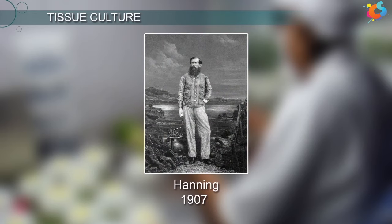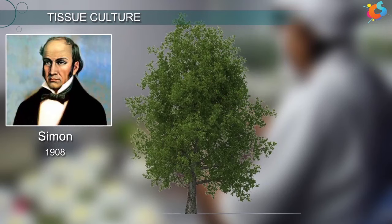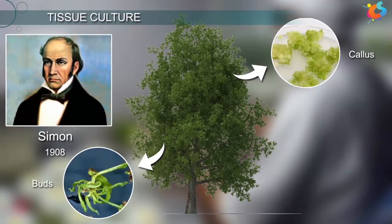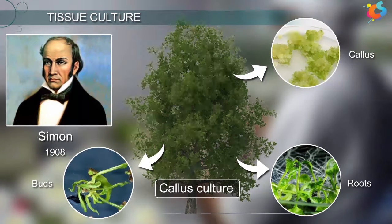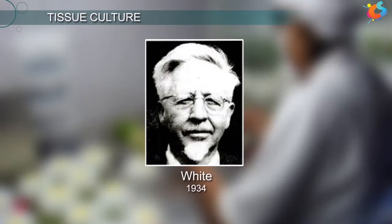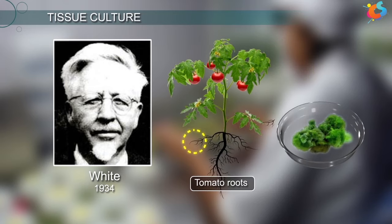Taking cue from his experiments, Hanning in 1907 took nearly mature embryos of crucifers and successfully grew them to maturity. In 1908, Simon regenerated callus, buds, and roots from poplar stem segments and established the basis for callus culture. A breakthrough came from White in 1934, who experimented on tomato roots and reported that not only could cultured tomato root tips grow, but they could be repeatedly subcultured to fresh medium of inorganic salts supplemented with yeast extract.